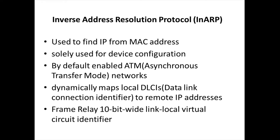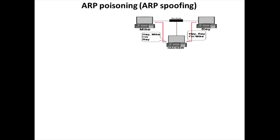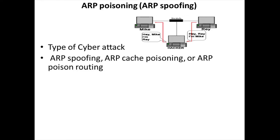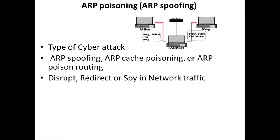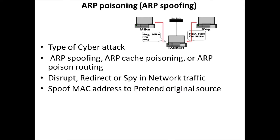Now let's discuss ARP Poisoning, which is a disadvantage of ARP. ARP poisoning — also called ARP spoofing or ARP poison routing — is a type of cyber attack. It is used to exploit the weakness in ARP to disrupt, redirect, or spy on network traffic. With this kind of attack, the attacker pretends to be the original or legitimate source. ARP poisoning can also lead to other attacks like man-in-the-middle attacks, DoS (denial of service) attacks, or session hijacking.